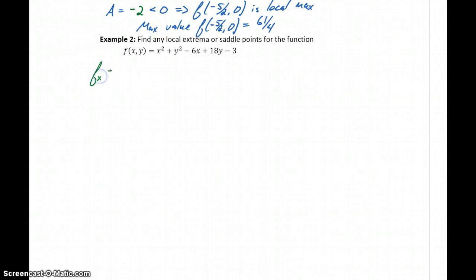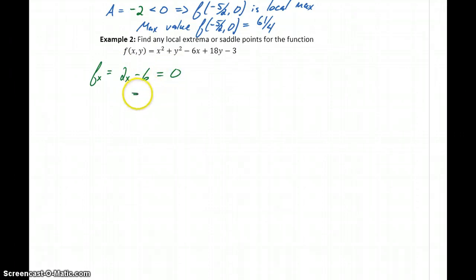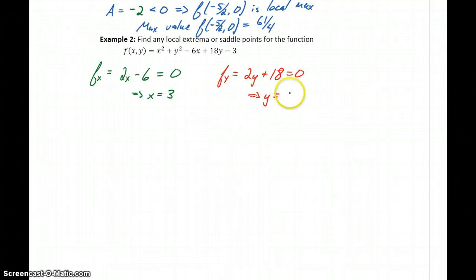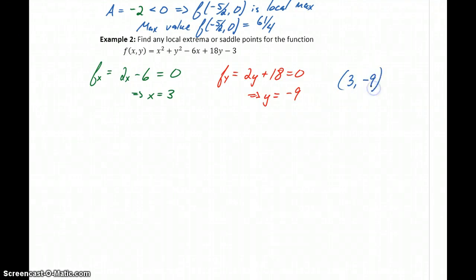Example 2 — we'll approach things much the same way. We start by finding f sub x, the first partial derivative with respect to x, which will be 2x minus 6. Setting that equal to 0 and solving gives x equals 3. Then we take f sub y, the first partial derivative with respect to y, to get 2y plus 18. Setting that equal to 0 gives y equals negative 9. So again, we have just one critical point to consider, which is 3, negative 9.